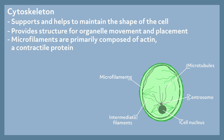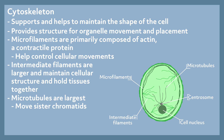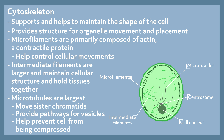Microfilaments are primarily composed of actin, a contractile protein, and help to control cellular movements like contraction and cytokinesis. Intermediate filaments are a little larger in diameter and work to maintain cellular structure and hold tissues together, like skin for instance. Microtubules are the largest of the three components, making up the cytoskeleton — they are hollow tube-like structures that help move sister chromatids during metaphase so they can line up in the center of the cell, provide a pathway for vesicles to move through the cell, and help protect the cell from being compressed.